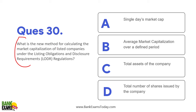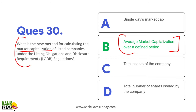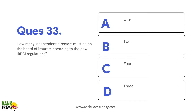Which bank became the first to join the India International Bullion Exchange as a trading cum clearing member? SBI. What is the new method for calculating market capitalization? Market capitalization of companies will now be calculated according to the average market capitalization over a defined period. In the past it was calculated on a single day's closing price, but now it will be based on average market cap over a defined period — that is important. How many independent directors must be on the board of an insurer according to new IRDAI regulations? Three independent directors.